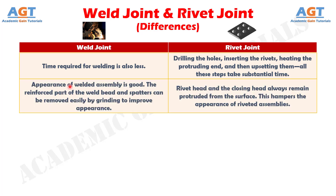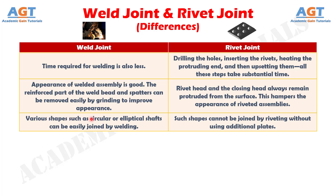Number 12: appearance of welded assembly is good. The reinforced part of the weld bead and spatters can be removed easily by grinding to improve appearance, whereas rivet head and the closing head always remain protruded from the surface. This hampers the appearance of riveted assemblies. Number 13: various shapes such as circular or elliptical shafts can be easily joined by welding, whereas such shapes cannot be joined by riveting without using additional plates.